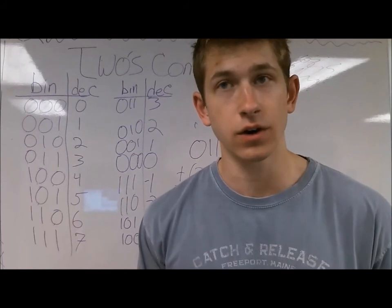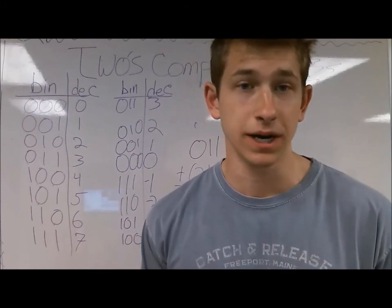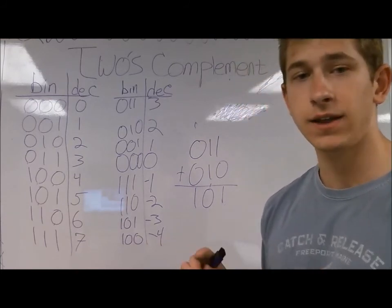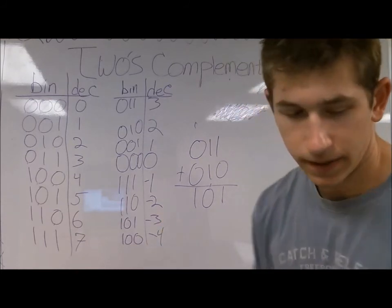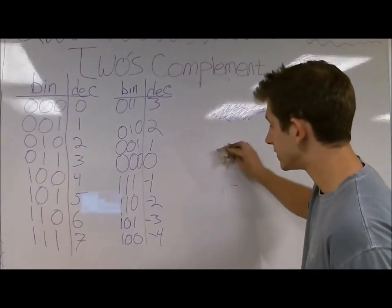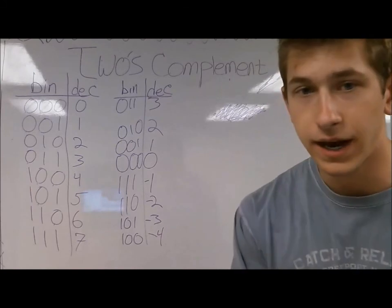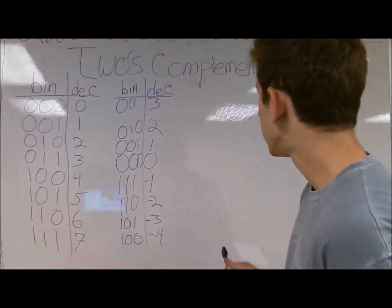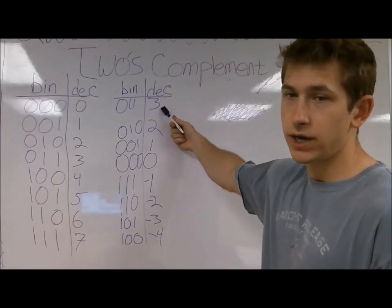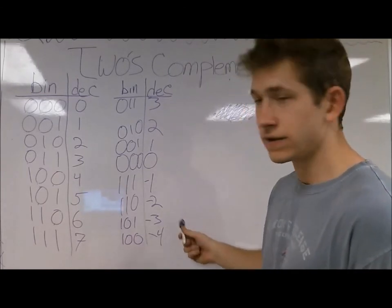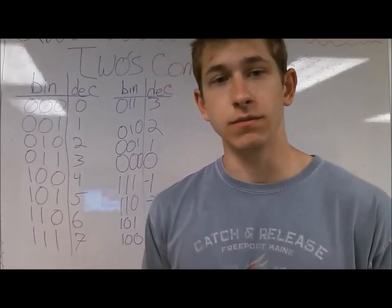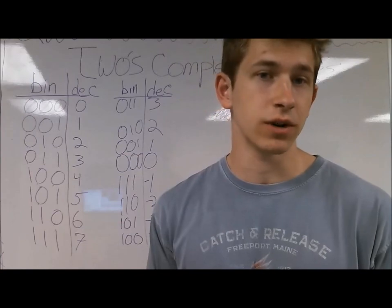It can also occur if you add two negatives and get a positive as a result. Overflow occurs because the scope of our values cannot handle the operations being performed. The scope of our current value is only up to positive 3. Any higher than that, it's not supported. Because 2 and 3 equals 5, that's out of the scope of our operations, and so it causes an overflow. The only way to handle overflow is to have the computer tell you that it's an unsupported operation.